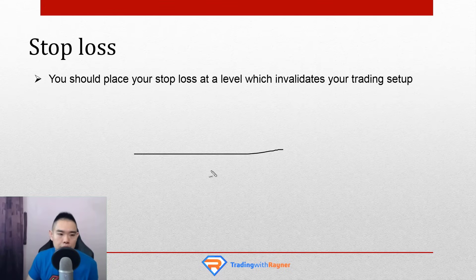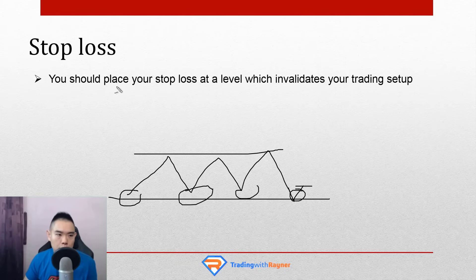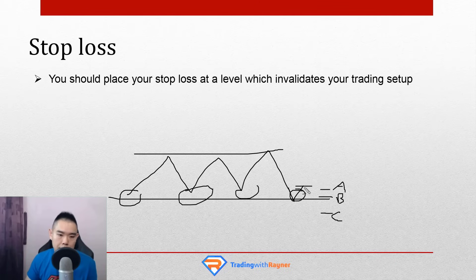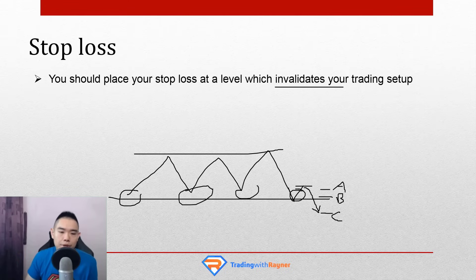Another example: say you're trading support and resistance. The market is in a range — up, down, up, down — and this is the lows of the range, otherwise known as support, bouncing once, twice, three times, and a fourth time. Let's say you're long at this price point. Your stop loss should be placed at the level which invalidates your trading setup. At which point will support be broken — A, B, or C? It's C, because if price hits down to point C, this area of support is broken. At A or B, support could still be intact since the price didn't breach the lows of support.